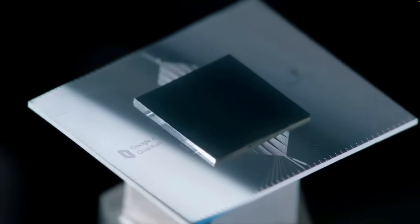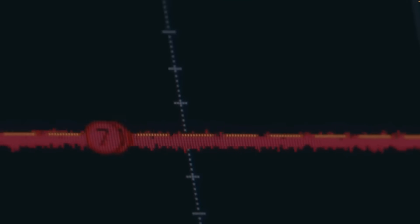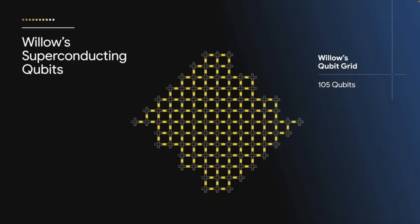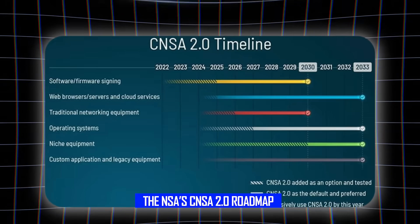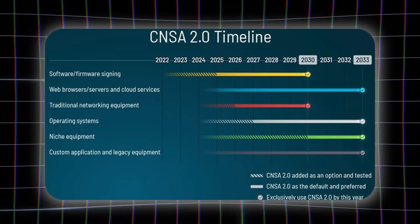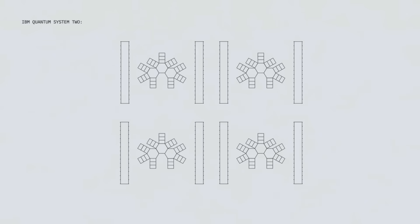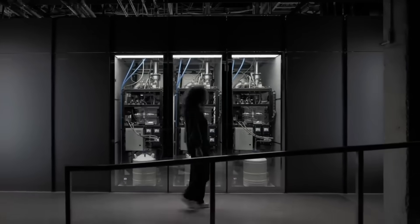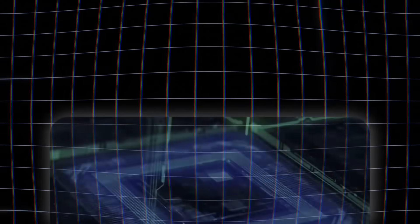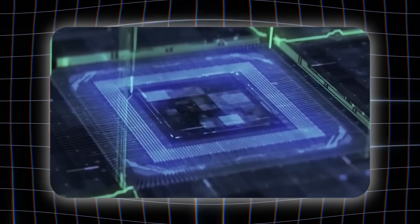Think about that for a second. Governments aren't debating if this happens. They've already marked a date on the calendar. The NSA's CNSA 2.0 roadmap quietly sets 2035 as the absolute deadline for post-quantum readiness. That's why researchers call it the Omega Code, the endgame for the digital locks we've trusted for decades.